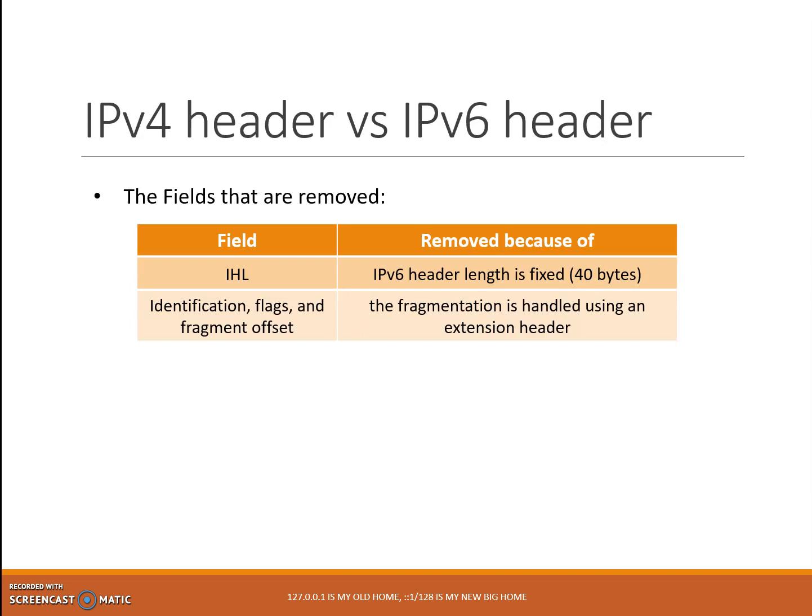Number 2: identification, flags, and fragment offset. All these fields are used for fragmentation in IPv4 and are removed from IPv6 because fragmentation in IPv6 is handled differently — it is handled using the fragment extension header.